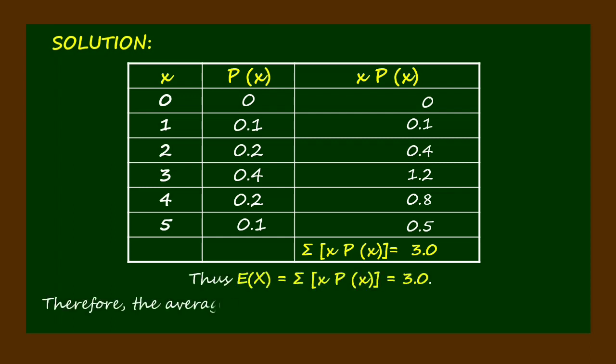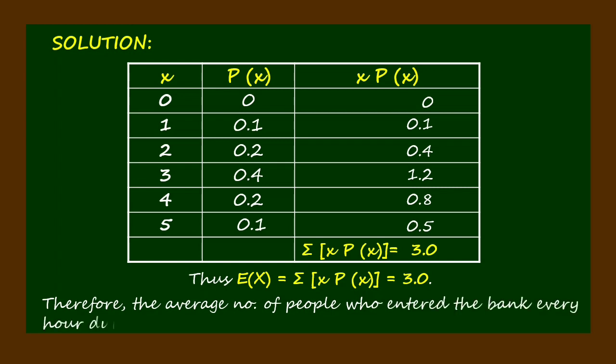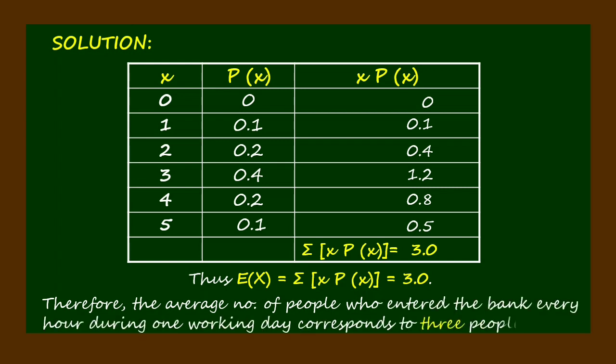Thus, the mean or the expected value is 3.0. Therefore, the average number of people who entered the bank every hour during one working day corresponds to three people.